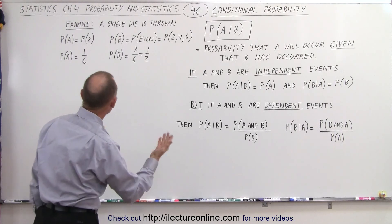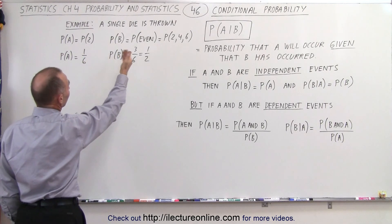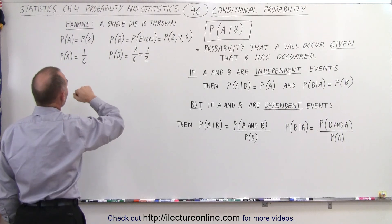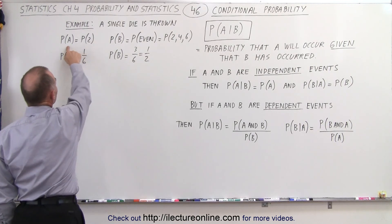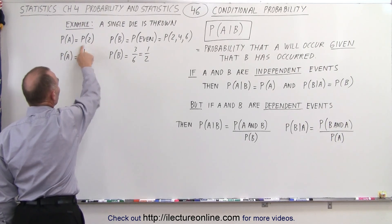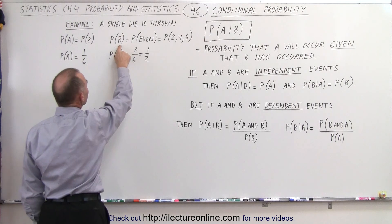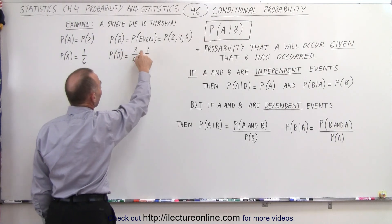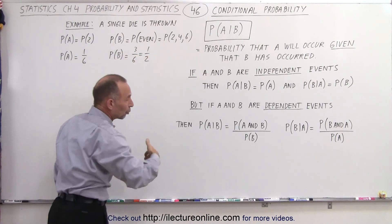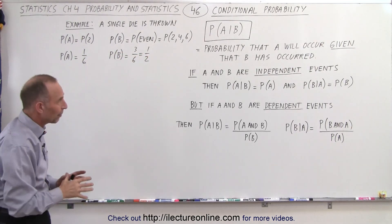As an example, let's say that we're tossing a single die. Event A is that we throw a 2, and event B is that the die shows an even number — a 2, 4, or 6. Those are some examples.